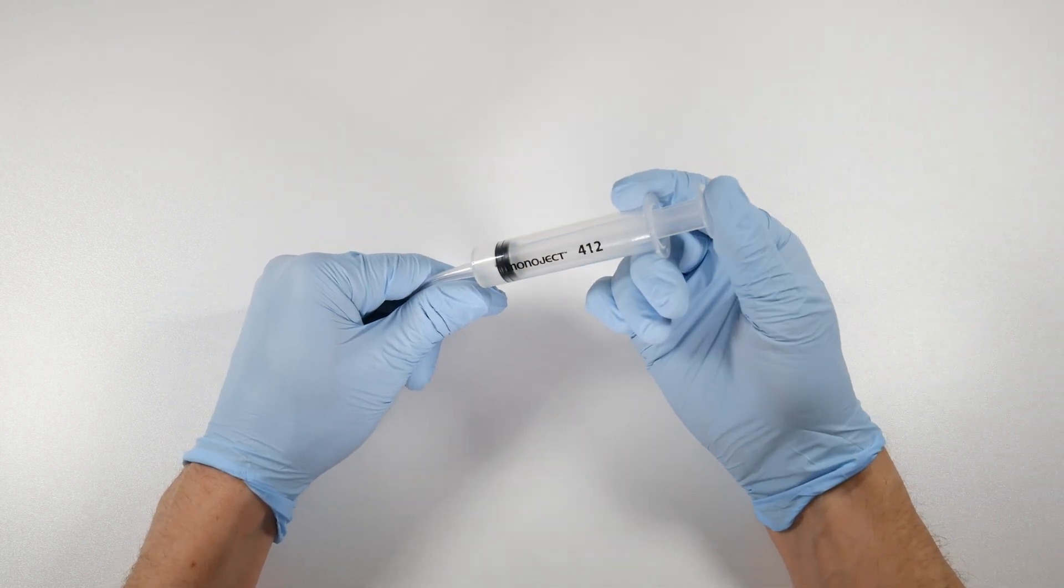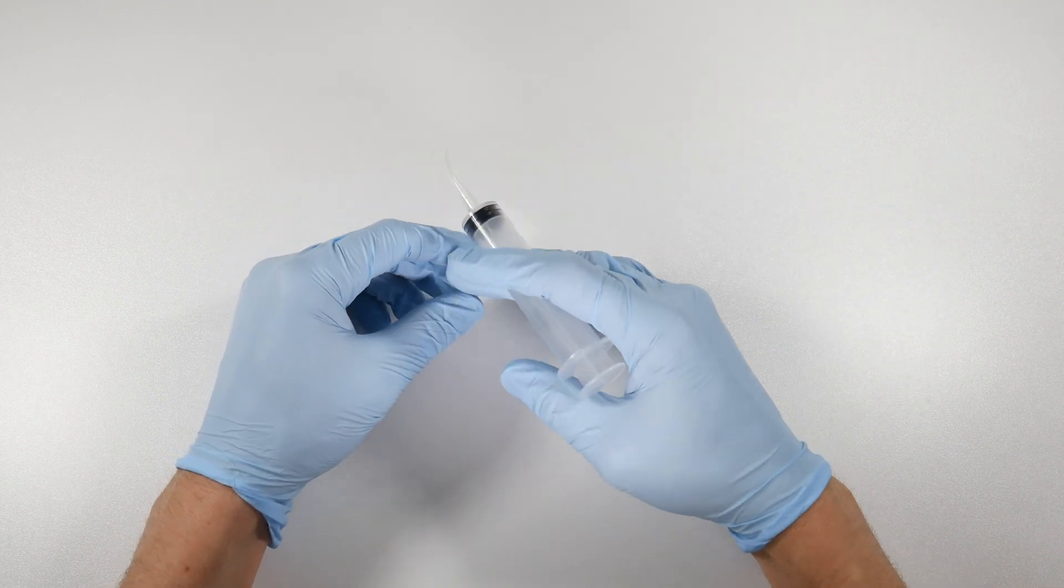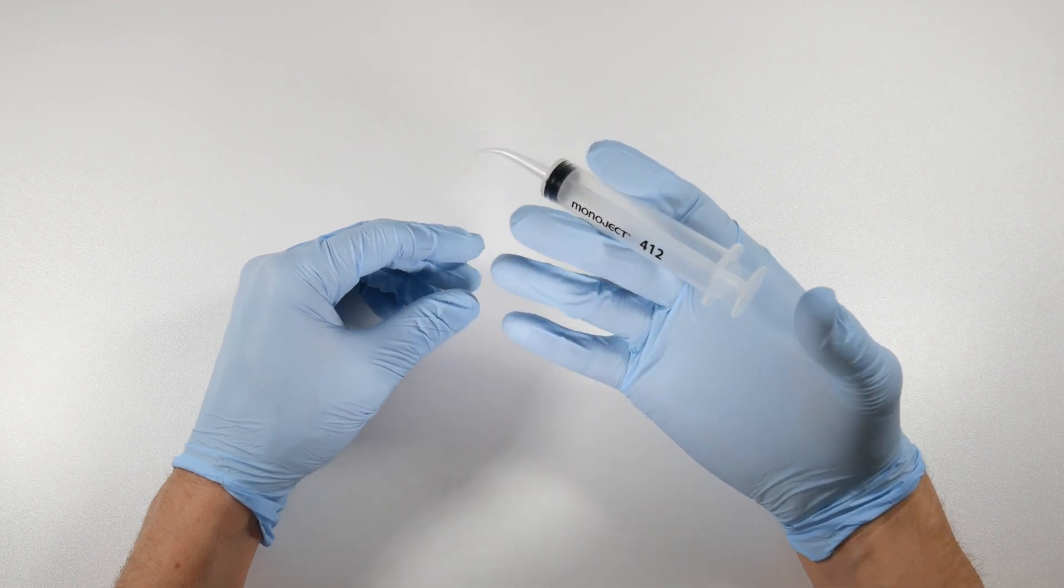When you remove the tooth, have this thing ready to go, pick it up off your tray, spray it in the socket, get everything nice and clean in there with the suction, get the suction out of there and allow the socket then to fill up with blood one more time.